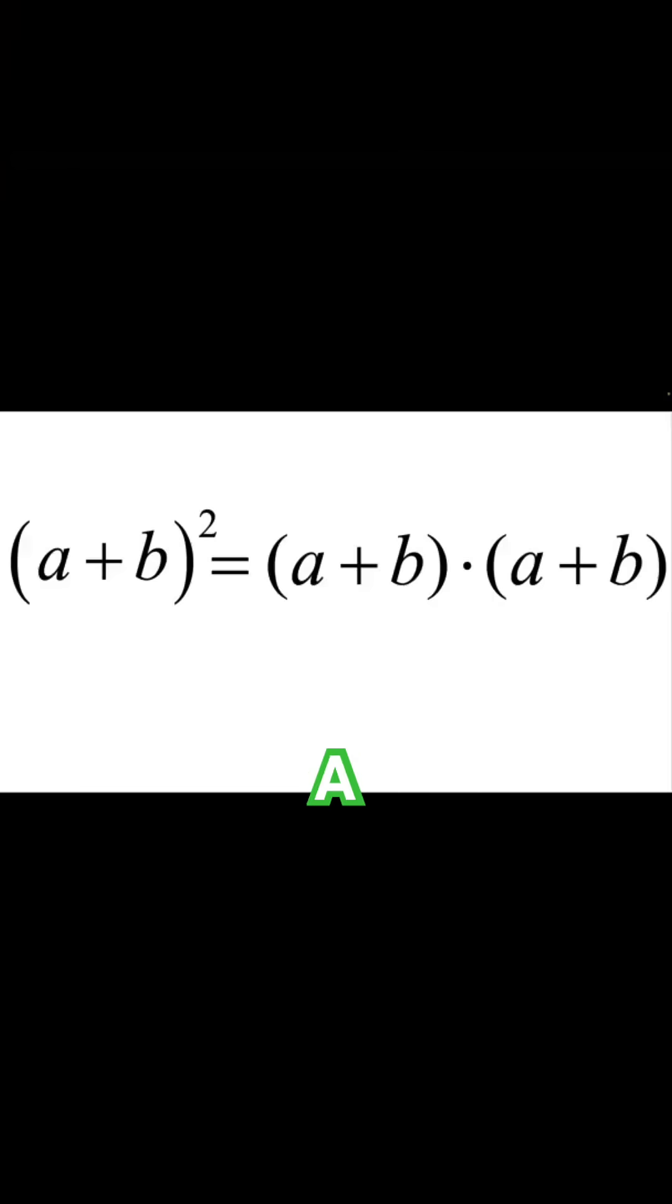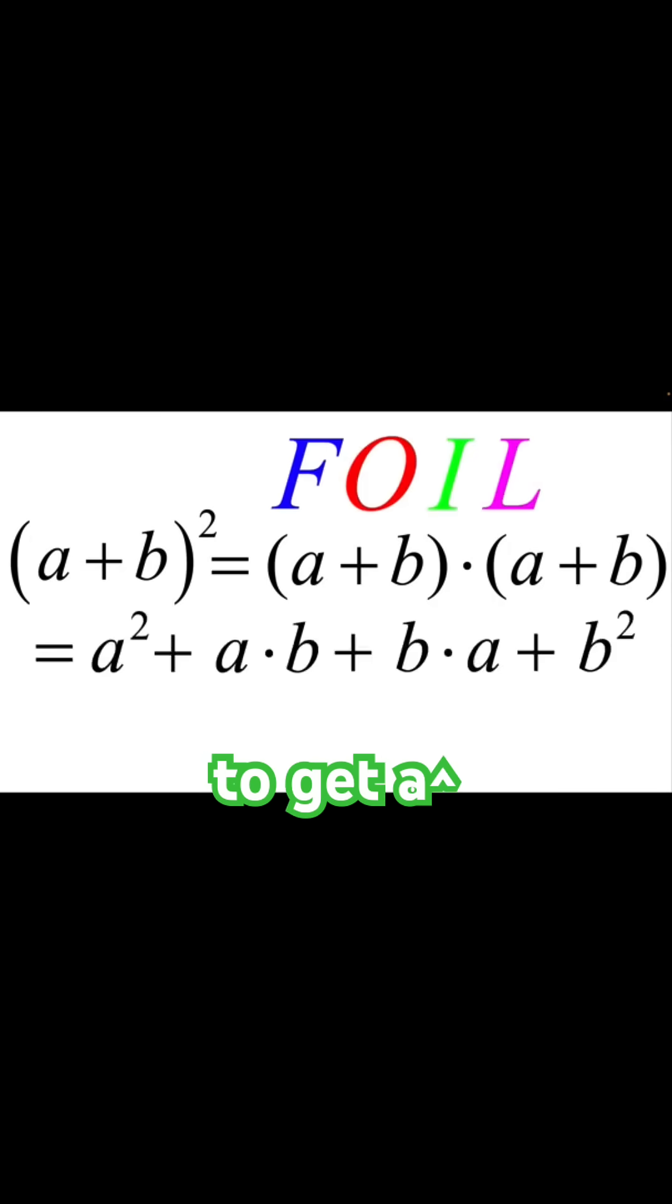More fundamentally, a plus b quantity squared has to be foiled to get a squared plus 2ab plus b squared, which is not a squared plus b squared unless a or b is 0.